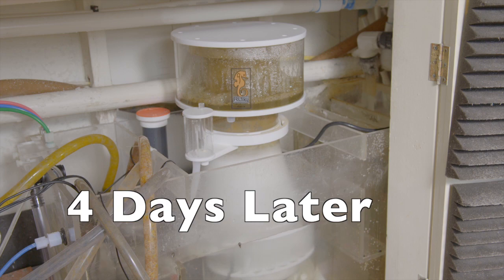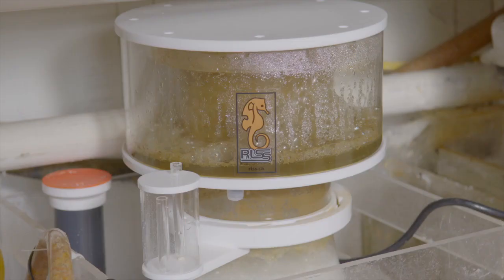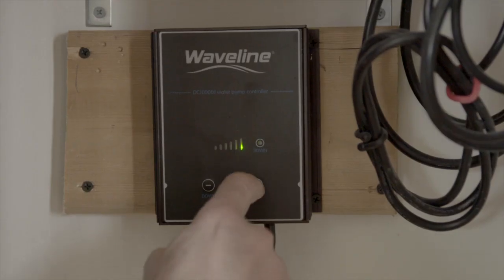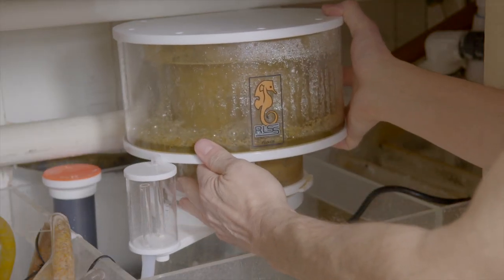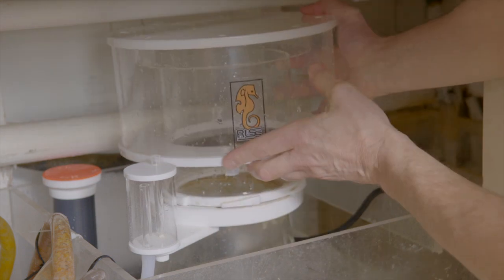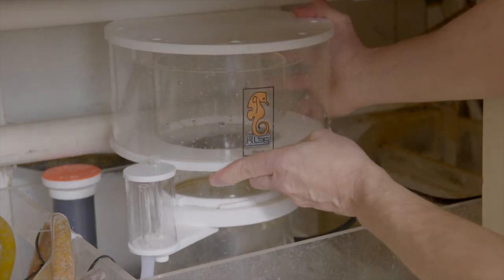My new Reef Life Support DB10i has been running for four days now and this is what the collection cup looks like. As you can see, we are getting plenty of protein waste accumulating right where we want it. One of the great things about the DB10i is the design to allow for easy cleaning. You just twist the collection cup and lift it off the base.